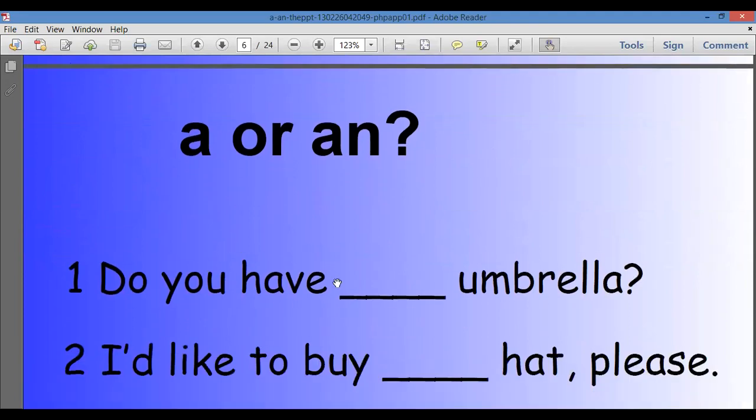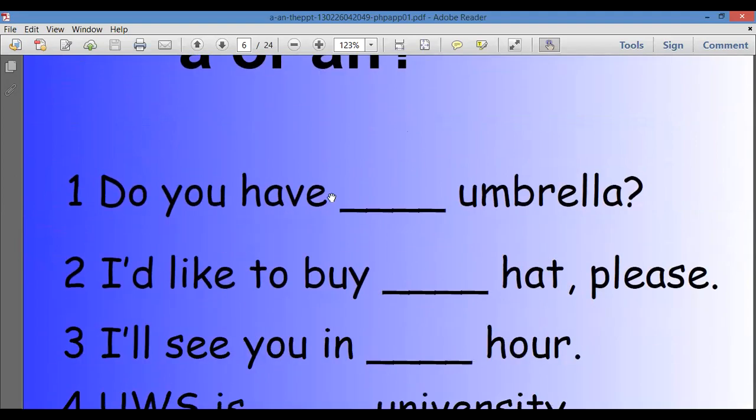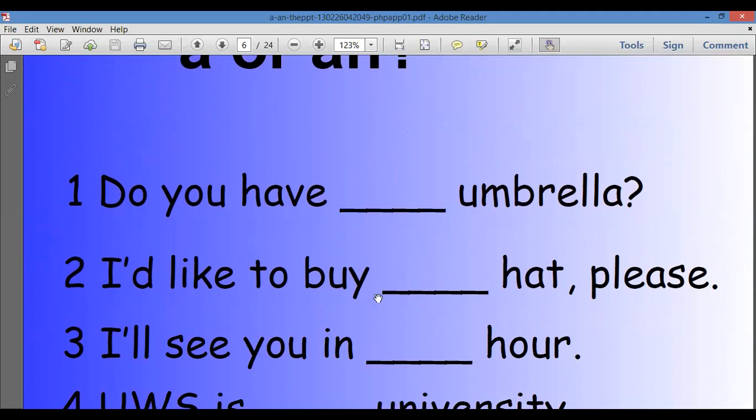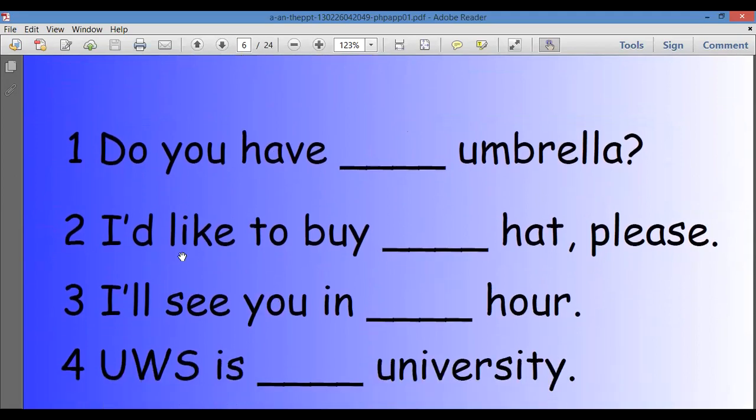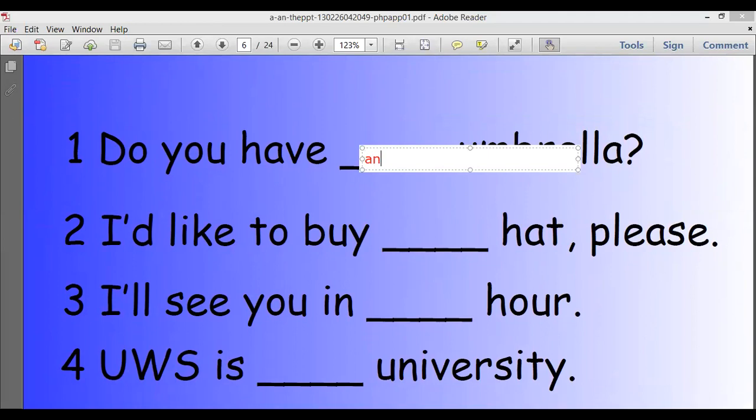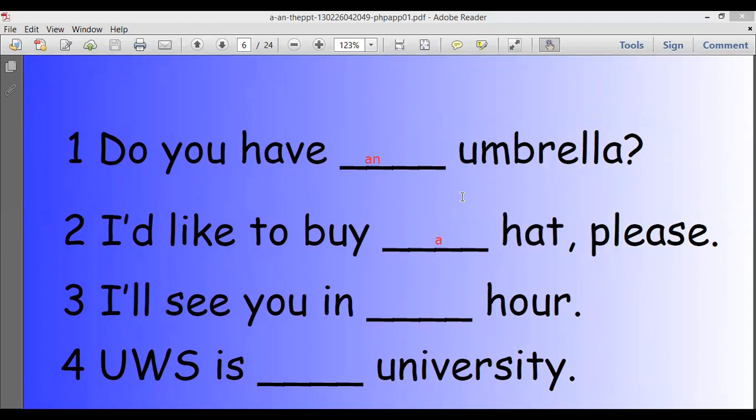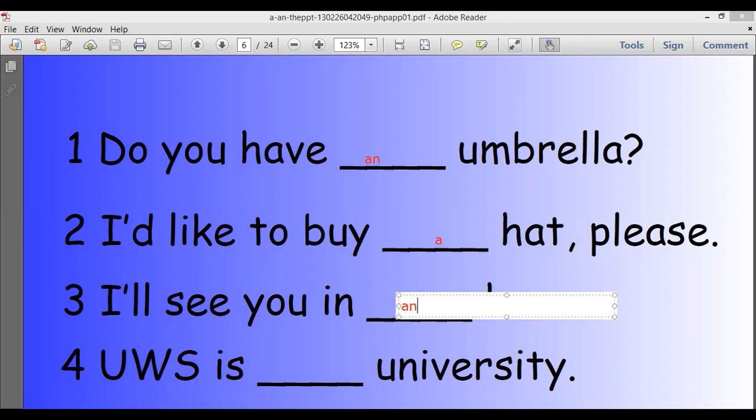Do you have an umbrella? An, because before u, we use an. And u is vowel. I would like to buy a hat, please. You're going to write here.